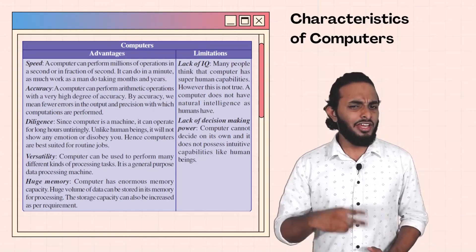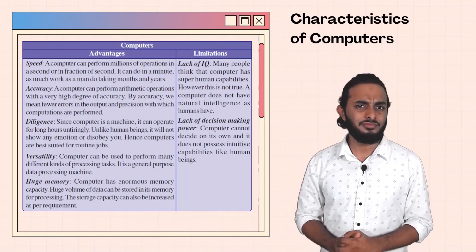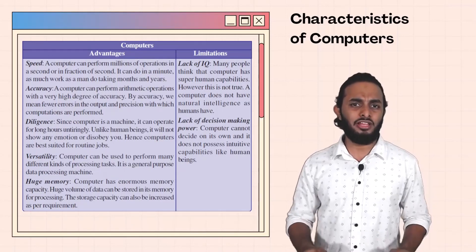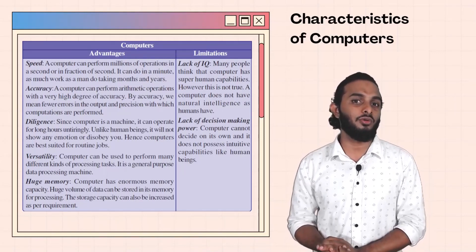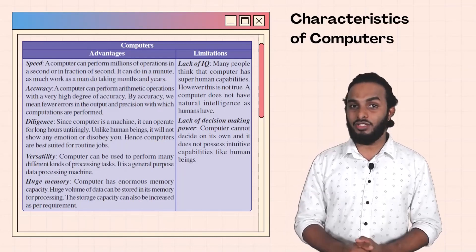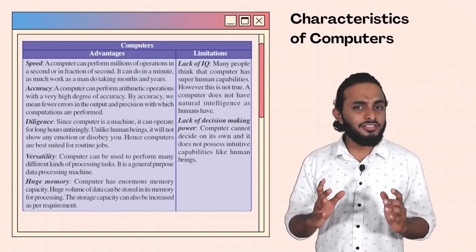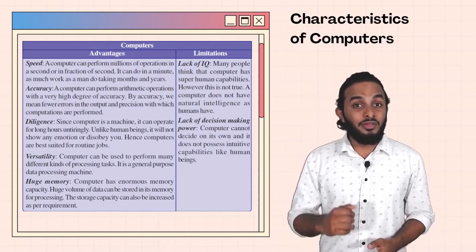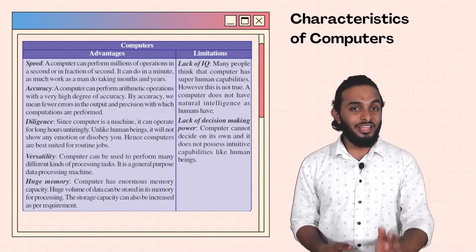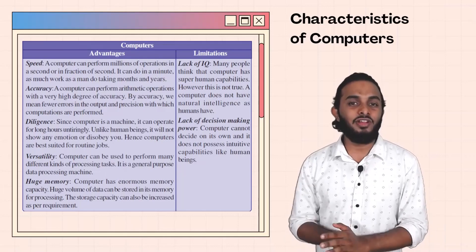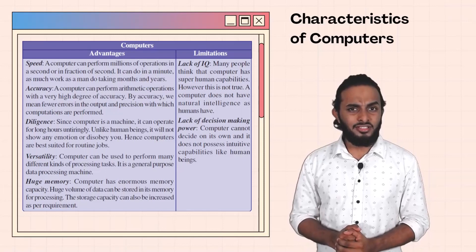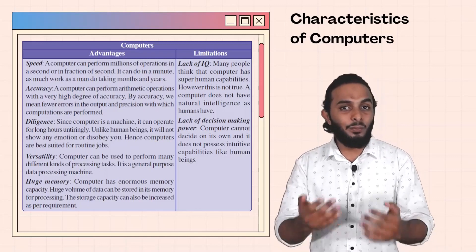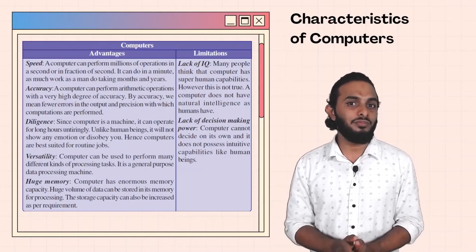There are also limitations. The computer is good but it has limitations. We can program it to do a lot of things. However, computers lack IQ and lack decision-making power. A computer cannot make decisions on its own; it only does what we instruct it to do. Lack of decision-making power is a key limitation.